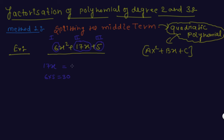If we take two numbers, the first number is 15 and the other number is 2. The multiplication of these two numbers must equal the multiplication of the first term's coefficient and the last term.